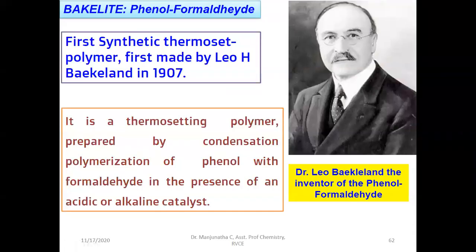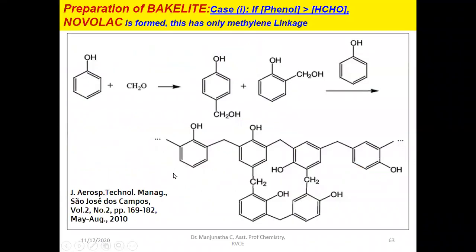Bakelite is also called phenol formaldehyde because it is prepared from two monomers: phenol and formaldehyde. This was the first synthetic thermosetting polymer, which was prepared in 1907 by Leo H. Baekeland. The word Bakelite is derived from the name of the inventor. It is a thermosetting polymer prepared by condensation polymerization of two different monomers, phenol and formaldehyde, in the presence of an acidic or alkaline catalyst. Based on the conditions, you will get two different intermediates in the preparation of Bakelite, so let us look at the two different cases.